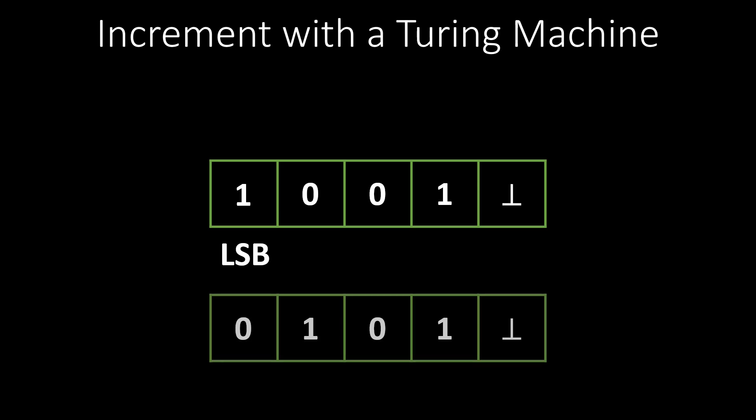Let us look at a short example of a Turing machine in action. We want to increment a number. The number is given as input on the tape in binary representation. We write the number backwards, so the least significant bit of the number is in cell 0. Here is a binary representation of the number 9. If we increment 9, we get 10.